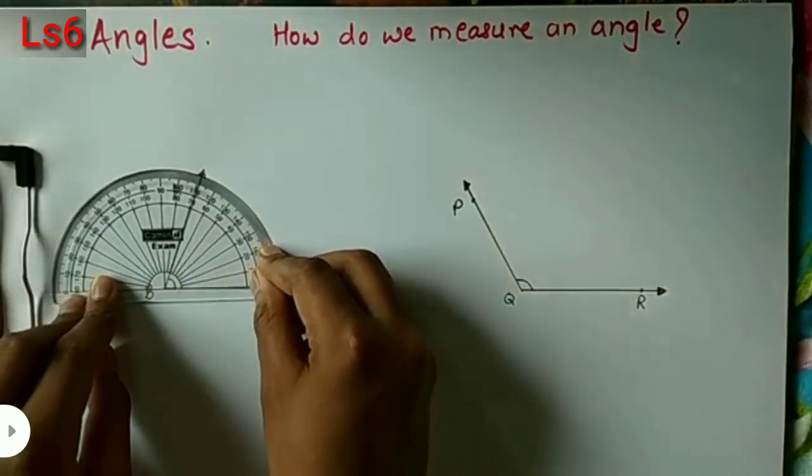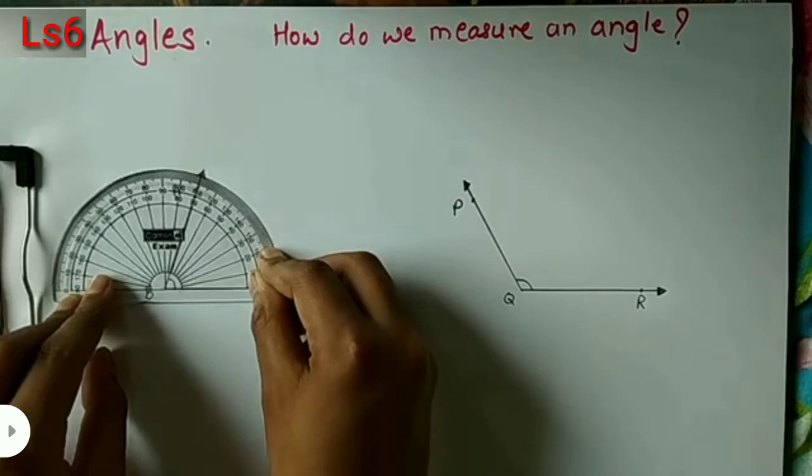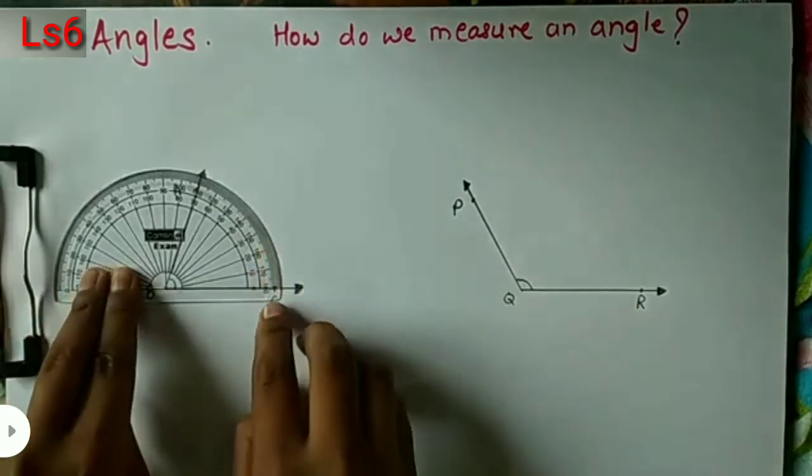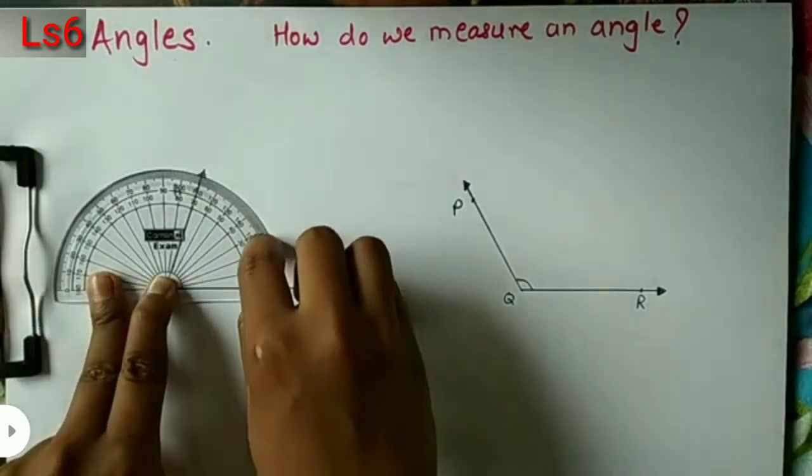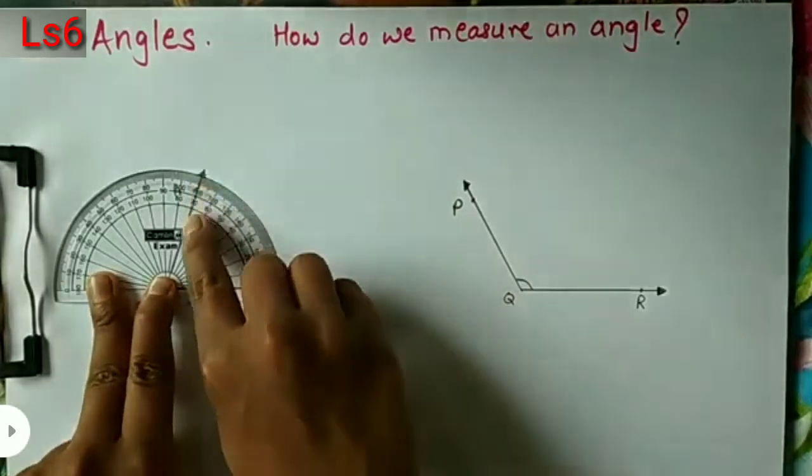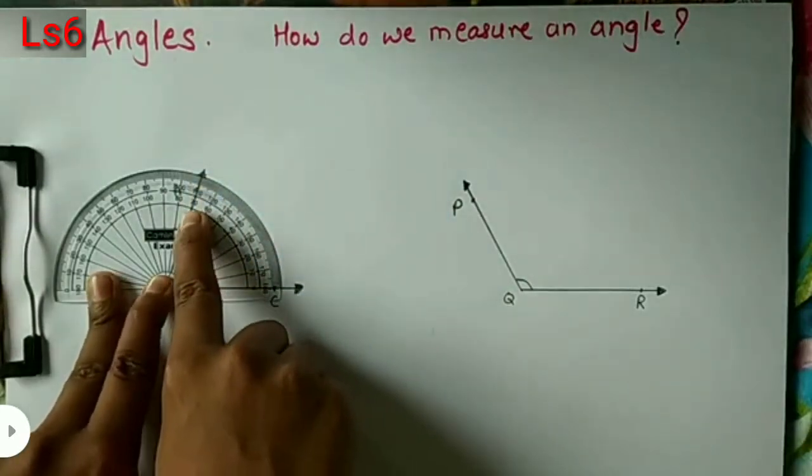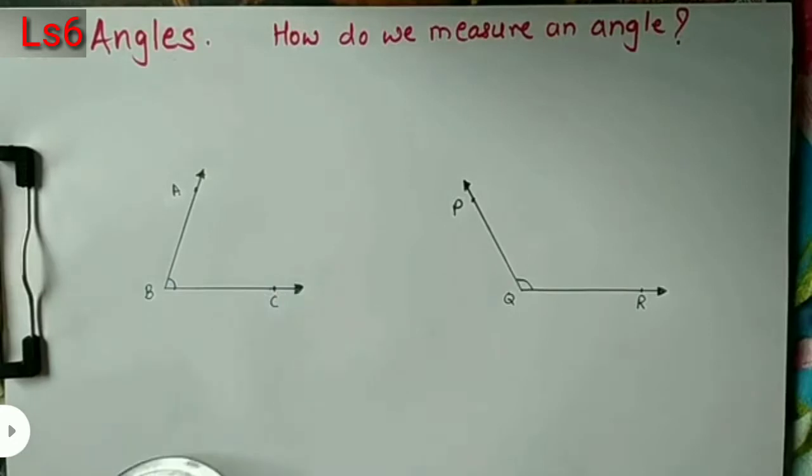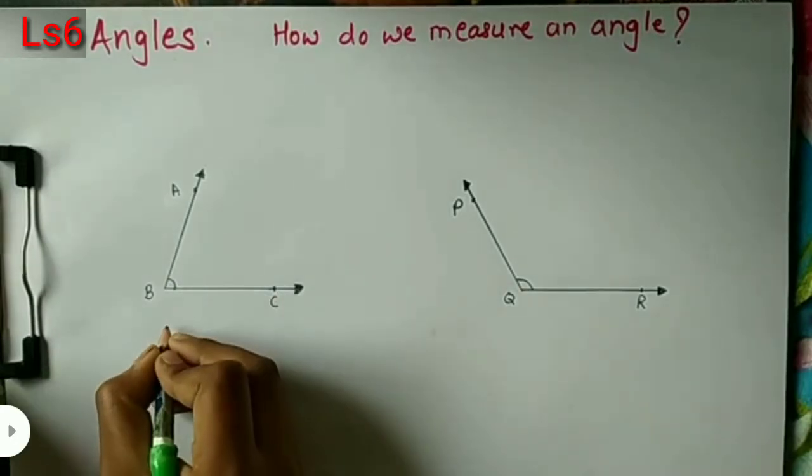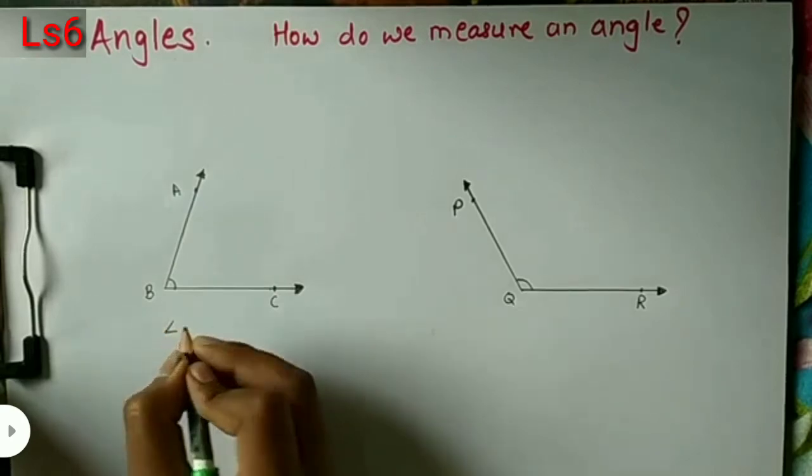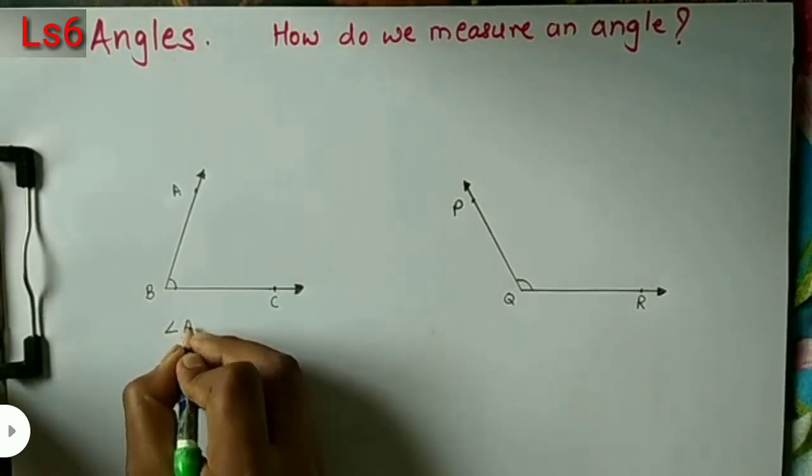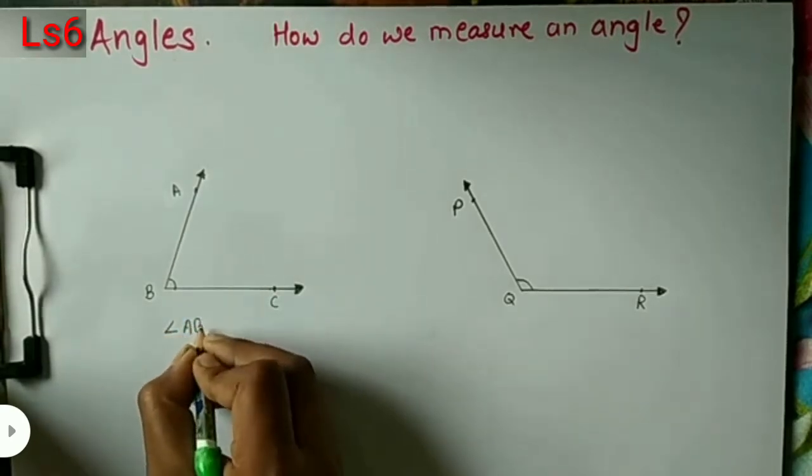We put the protractor on the vertex B. Count the divisions starting from the 0 on the right. Read the number on that mark. This number is the measure of the angle. Angle ABC is 70 degrees.